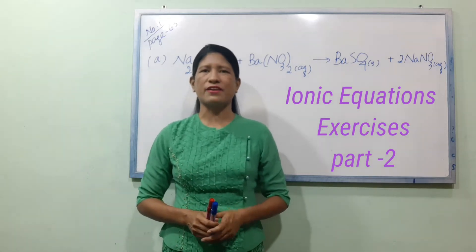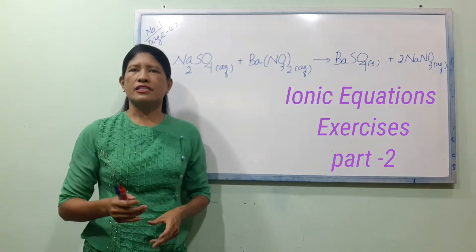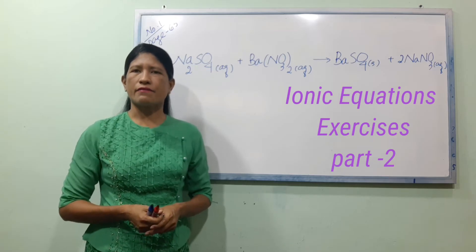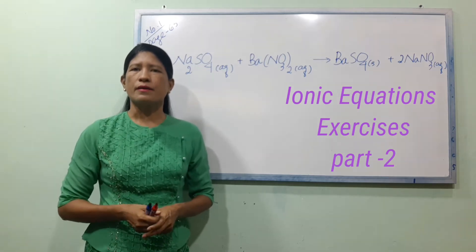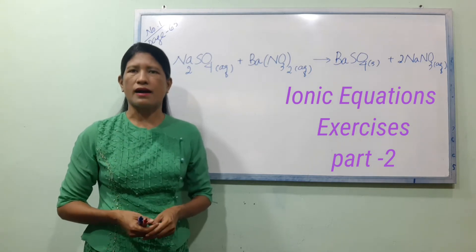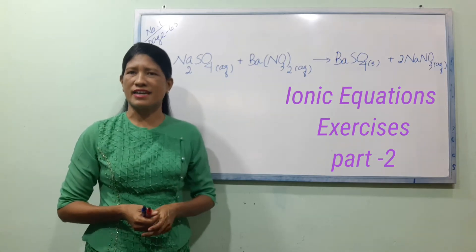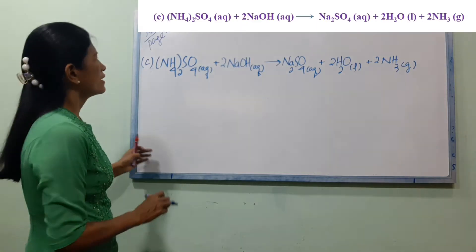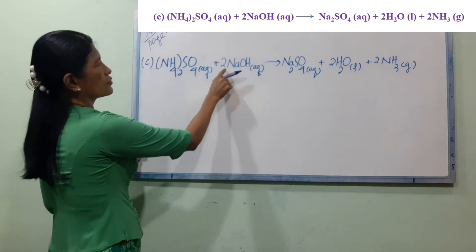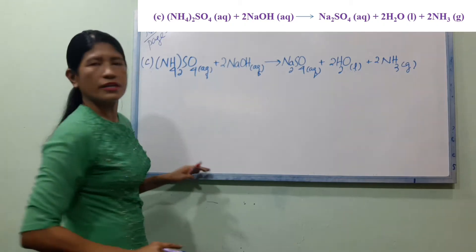Disposed Samyana 65 and Leasing Number 11, Number 4, Disposed Samyana 59, Review Question Number 2. You can see that NH4 two SO4 aqueous plus 2 NaOH aqueous gives Na2SO4 aqueous plus 2 H2O liquid.